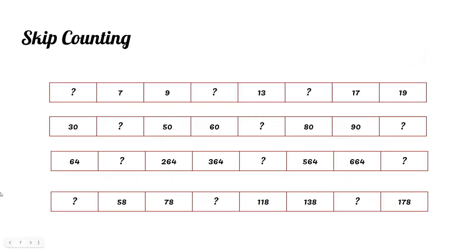To find the missing numbers, we have to subtract two continuous numbers. Here the two continuous numbers are 9 and 7. Nine minus seven is two. So seven minus two is five. Nine plus two is eleven, eleven plus two is thirteen, thirteen plus two equals fifteen.